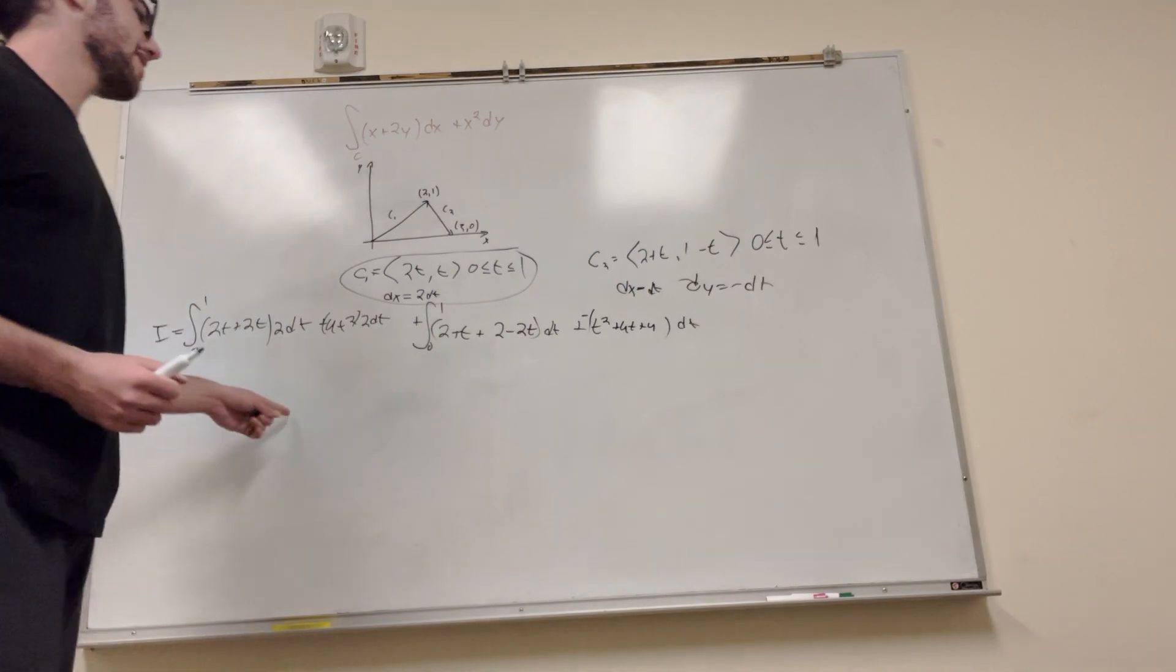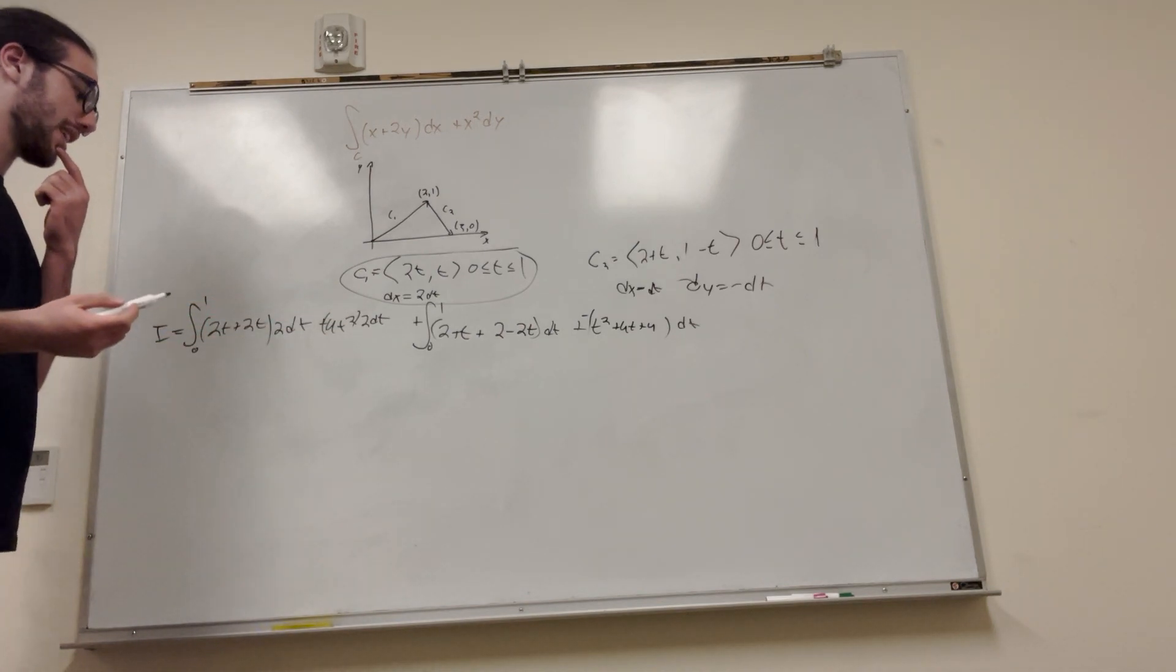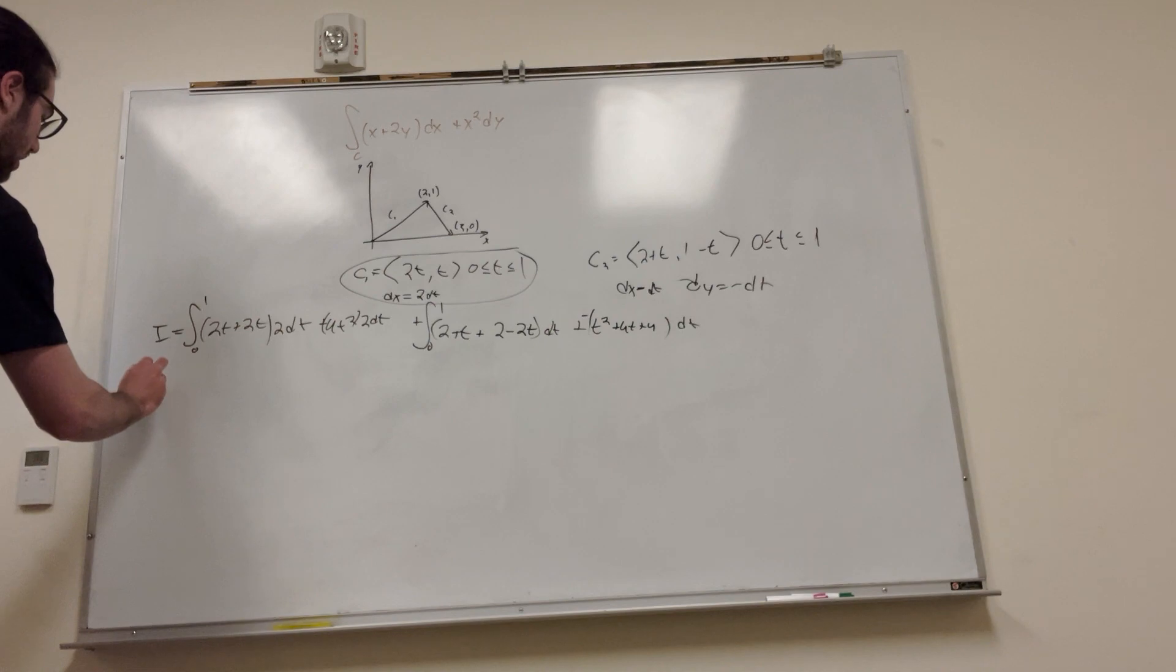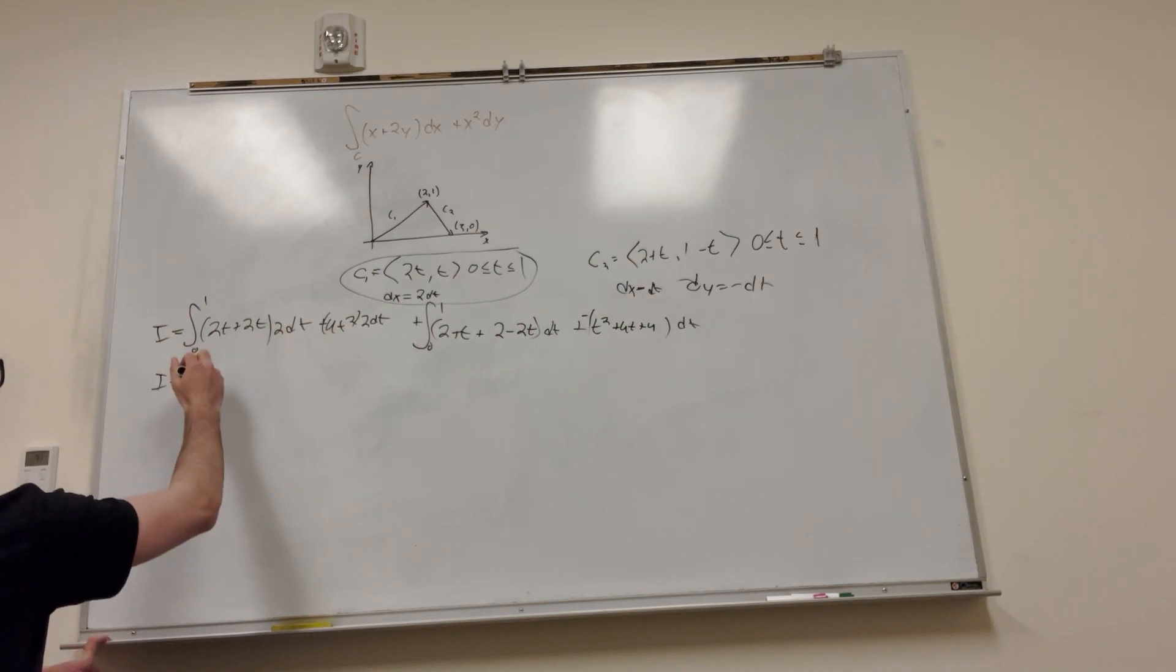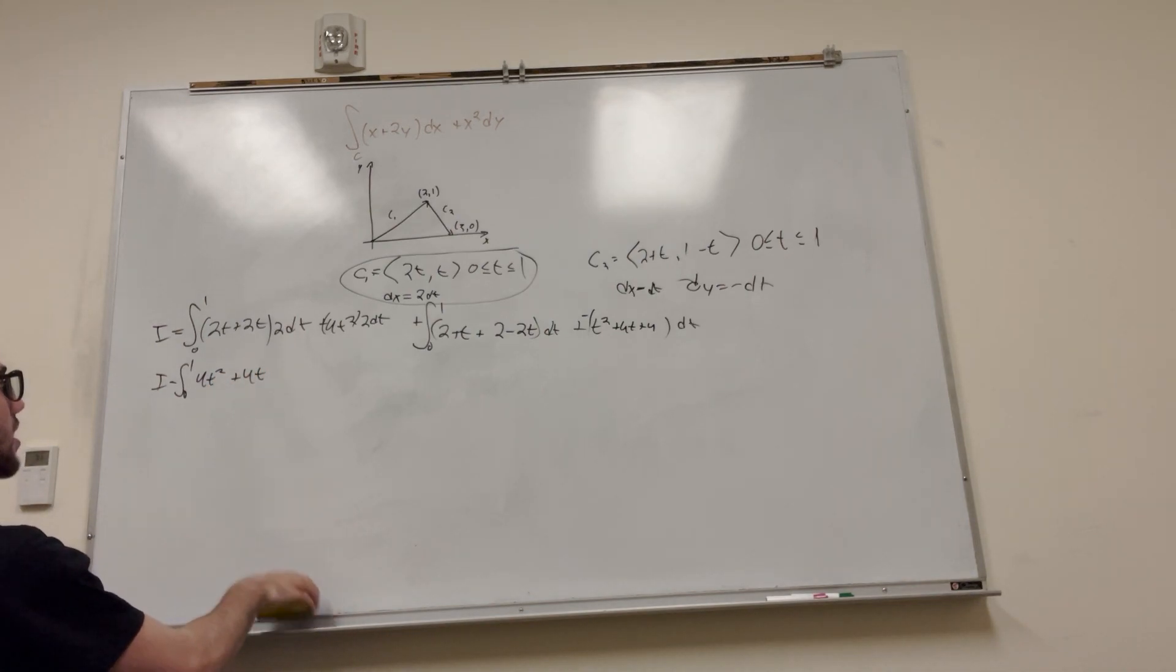All right, so here's our ginormous integral. It's pretty ugly looking and we can simplify it, so let's do that. And so these dt's can actually just be put together because it's the same thing pretty much. So what it's going to look like... to the 2t². Let's just put this up front. 4t² + 4t. Never mind, that's just going to be plus 8t.